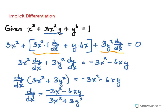Because you'll notice that we could divide everything by 3, and so our answer in the end is negative x squared minus 2xy all over x squared plus y squared.